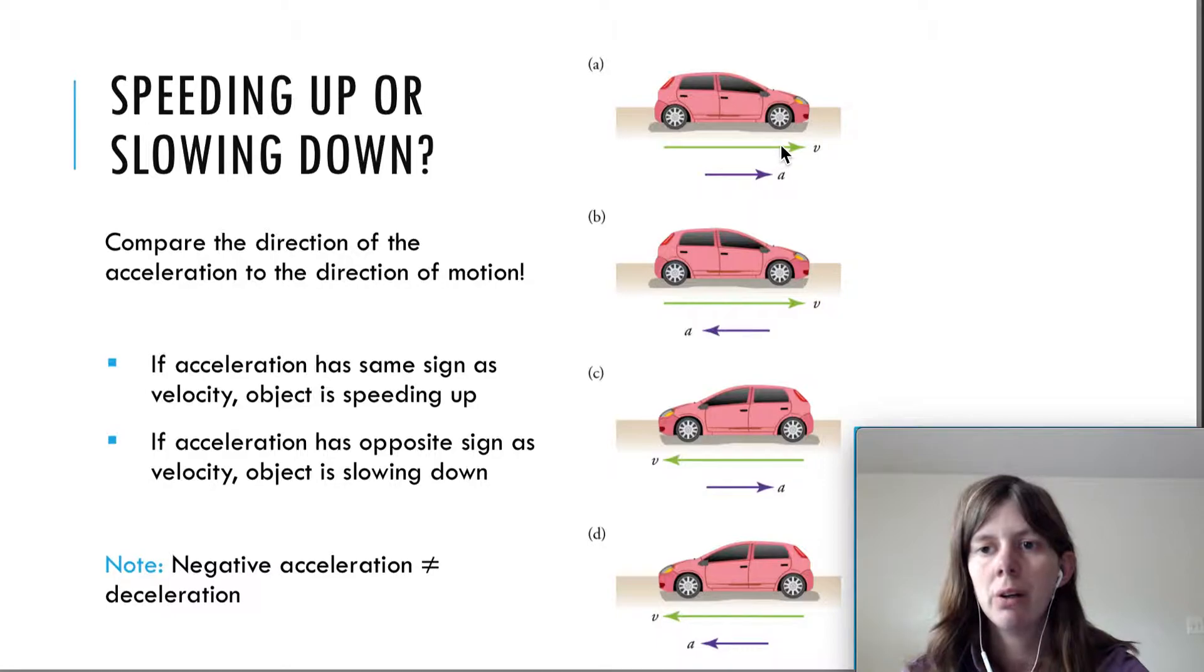If the acceleration has the same sign as the velocity, the object is speeding up. So, over here, V and A are in the same direction. That means speeding up. If the acceleration has the opposite sign as the velocity, the object is slowing down. Velocity is to the right, but acceleration is to the left. This means the car is slowing down. In the third figure here, velocity is to the left, acceleration is to the right, car is slowing down. Fourth figure, both V and A are to the left, that means the car is speeding up.